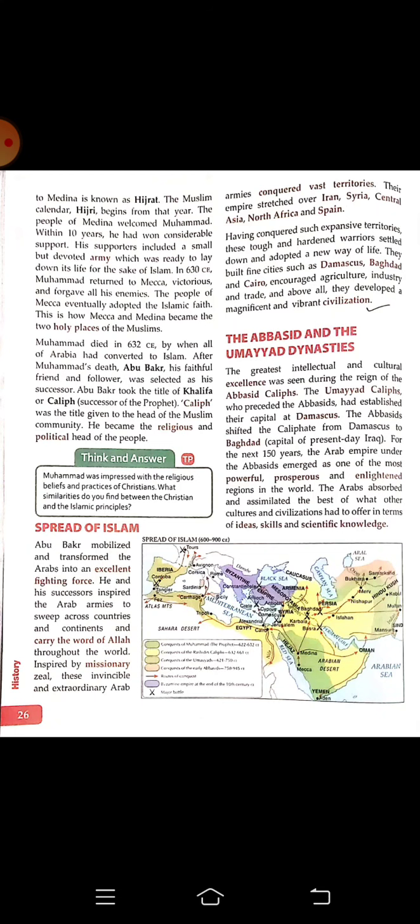Prophet Muhammad died in 632 CE, by which time all of Arabia had converted to Islam. After his death, Abu Bakr, his faithful friend and follower, was selected as his successor. Abu Bakr took the title of Khalifa, meaning successor — the one who would lead the religion after Prophet Muhammad. He became the religious and political head of the people.